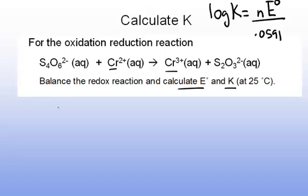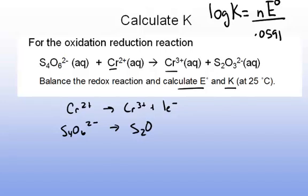When I write these as half reactions, I'll have chromium going to chromium 3+ plus 1 electron, and the sulfur compound is being reduced to 2 minus charge. When I write it down, I need to balance the elements first other than oxygen or hydrogen. In this case, it's the sulfur, and when I do that, I balance the oxygens as well. My charge is not balanced, so I need to pick up two electrons on this side, and so this reduction half reaction is balanced.